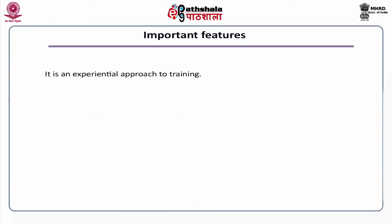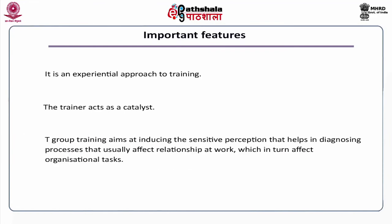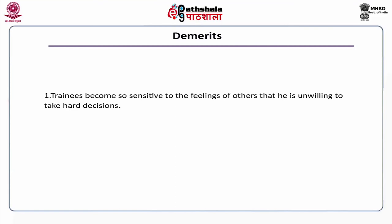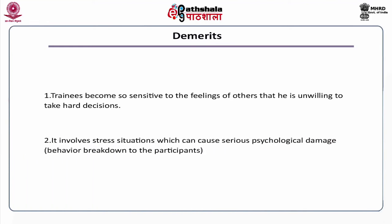T-group training is an experiential approach where the trainer acts as a catalyst. It aims at inducing sensitive perception that helps in diagnosing processes affecting relationships at work, which in turn can affect organizational tasks. The demerits of this method are: trainees may become so sensitive to the feelings of others that they are unwilling to take hard decisions; and it involves stress situations which can cause serious psychological damage and behavior breakdown in participants.